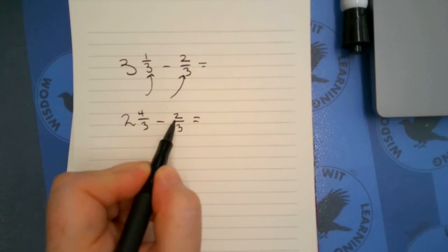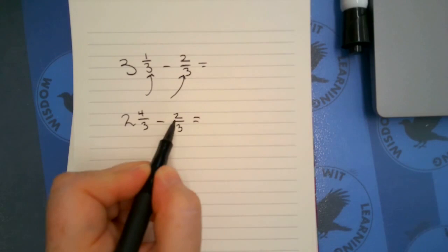I'm going to rewrite the rest of my problem, and now I can subtract. So I'm going to take two from four, which is going to leave me with two thirds. And then I still have two.